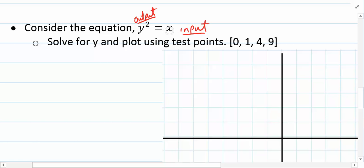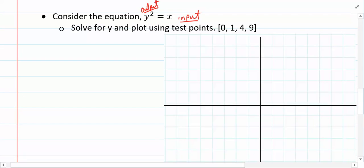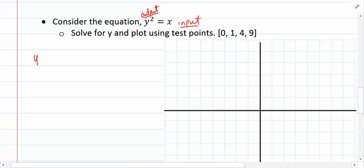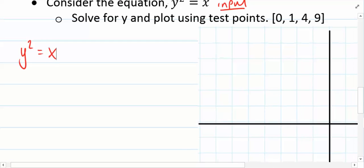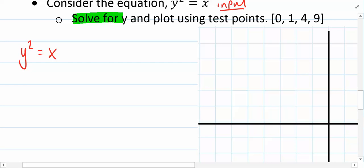That way we can start with an input value, apply some sort of mathematics to it, and then return or output a number for that function or relation. So since we have an equation that says y squared equals x, and we know that y is our output and x is our input, we should definitely solve for y. And then we're going to go a step further. We're going to plot and use these test points 0, 1, 4, and 9 as input values.